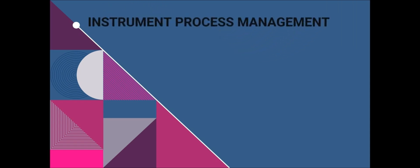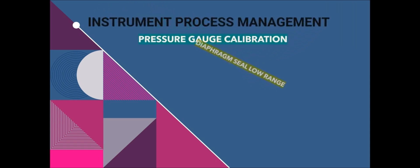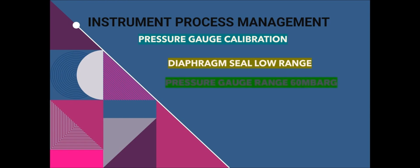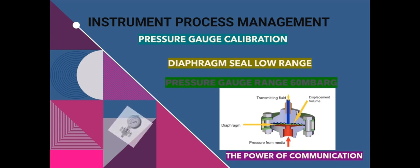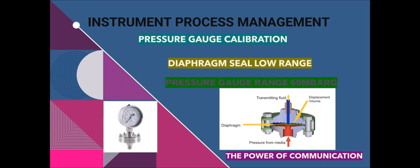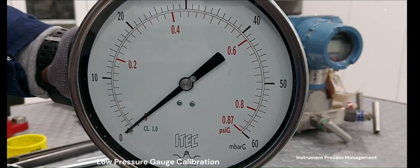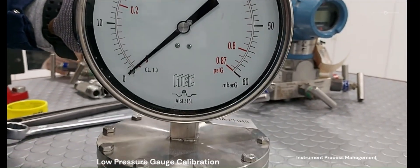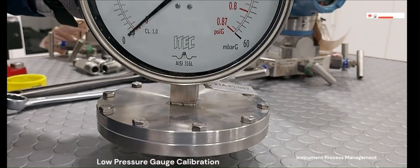Hi friends, welcome to my channel Instrument Process Management. Today I am introducing pressure gauge calibration — diaphragm seal, low pressure. The calibration range is 0 to 60 millibar. If you like the channel, please share and subscribe with your friends.